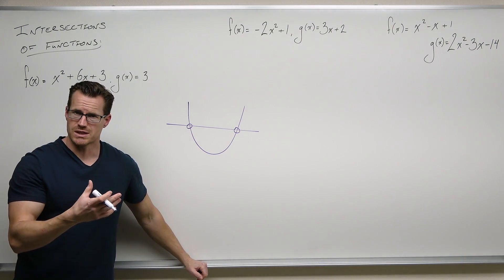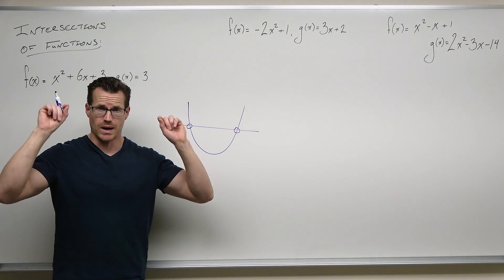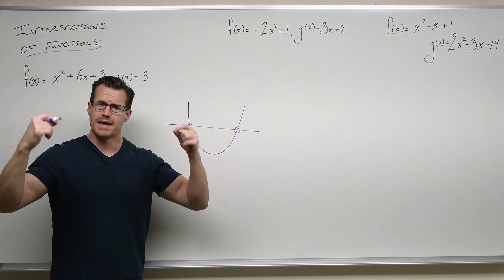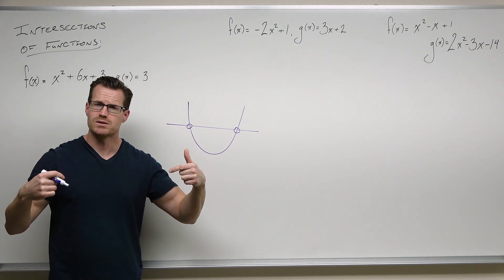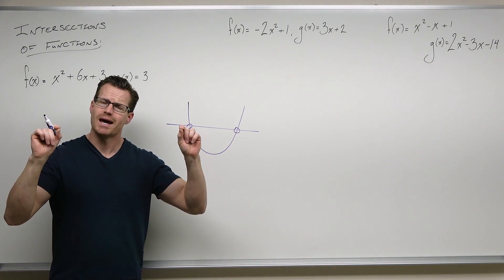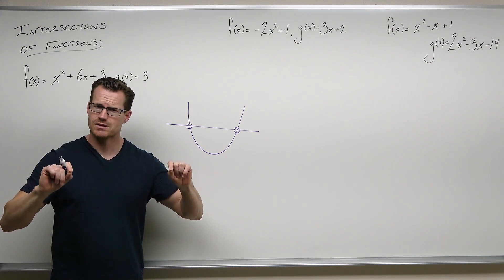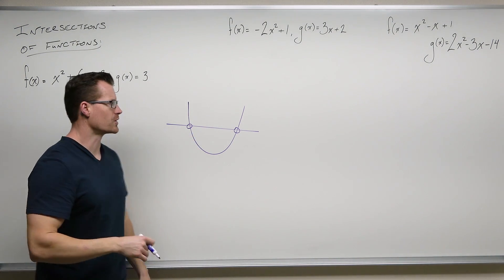So we set the functions equal saying we want the y values or outputs to be the same, find the x values that give us those equal outputs, and that's going to give us the points where the x's are the same and the y's are the same in both of our functions.